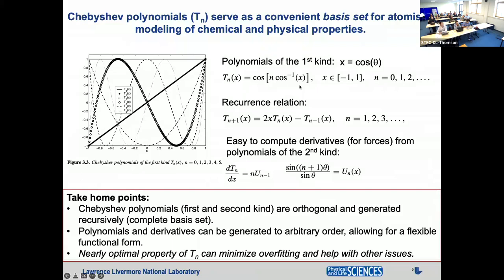Chebyshev polynomials are actually just a cosine series, not unrelated to a Fourier transform. Basically, we take powers of cosines as our basis set. If X equals cosine theta, then the Chebyshev polynomial becomes a function of X where we take cosine N times theta. Because X equals cosine theta is naturally bounded between minus one and one, that's an important feature — they're a function of a variable that oscillates between minus one and one, so we have to perform some kind of coordinate transform.